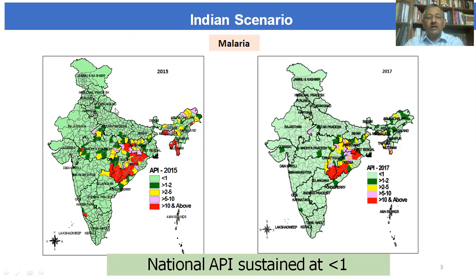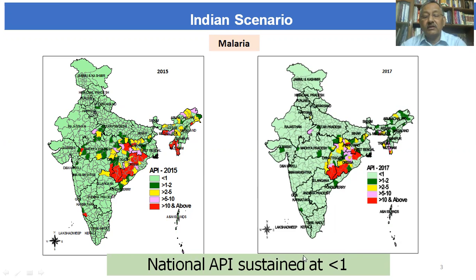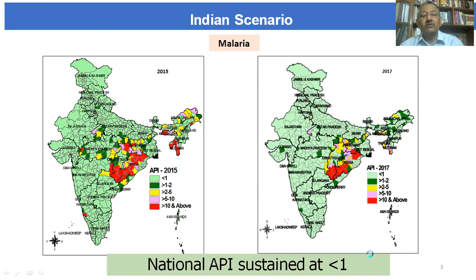Progress in 2017 shows that the red color area has decreased considerably, meaning higher API zones have gone down — that is the concept of high burden areas having high impact. Another good development is that the average API of the country has been sustained below one per thousand population. The country has been divided into three strata based on API, with the final target being zero strata.